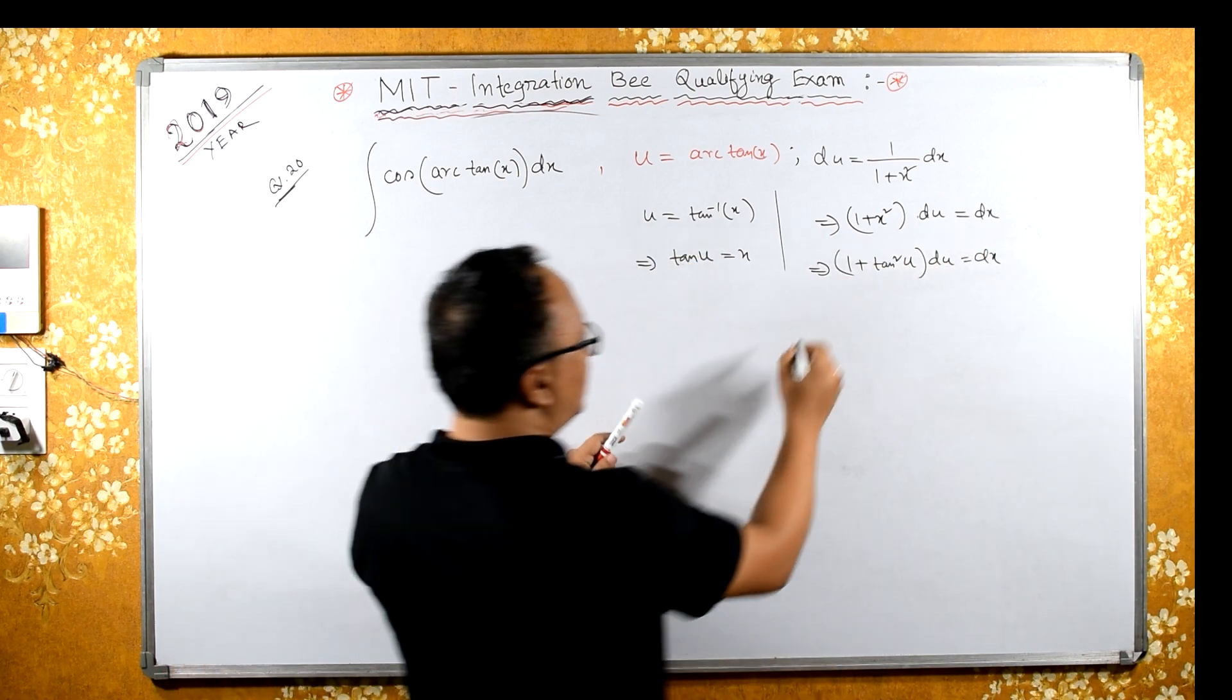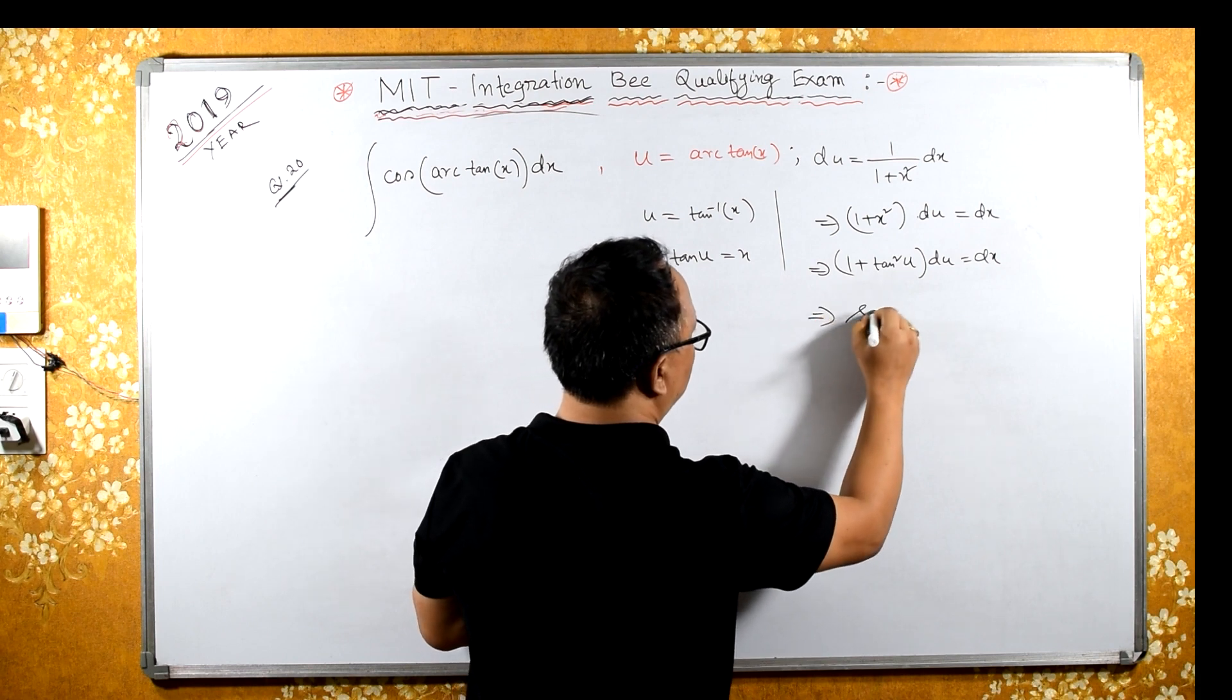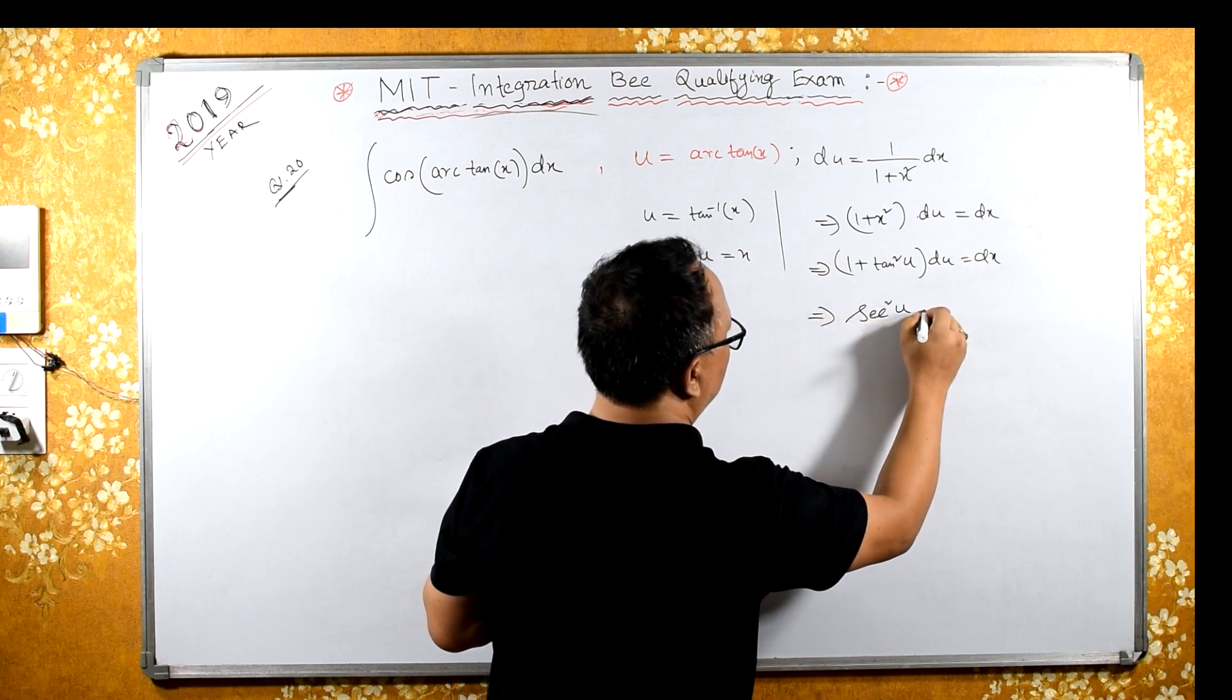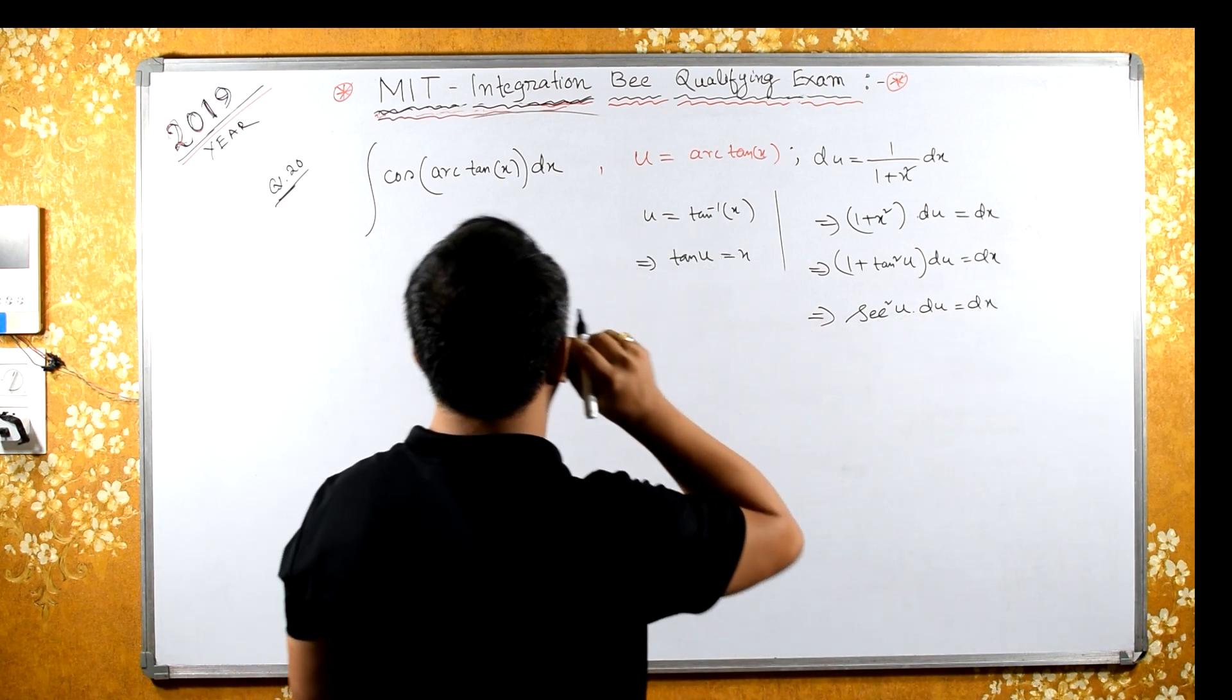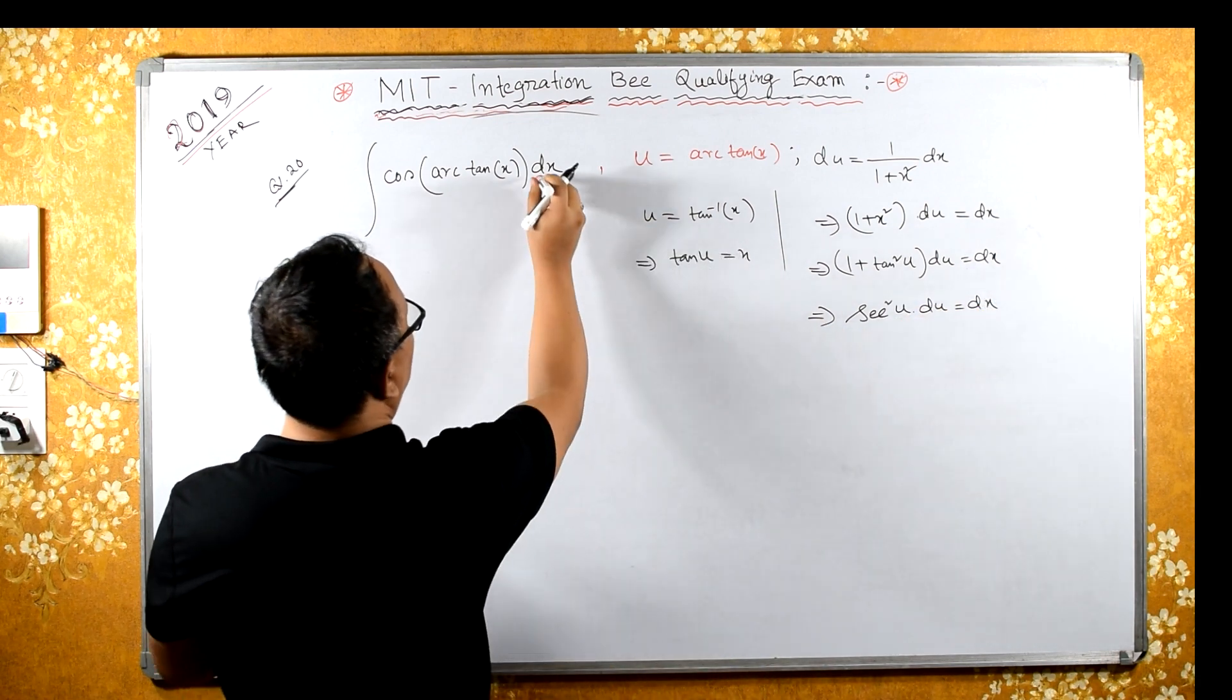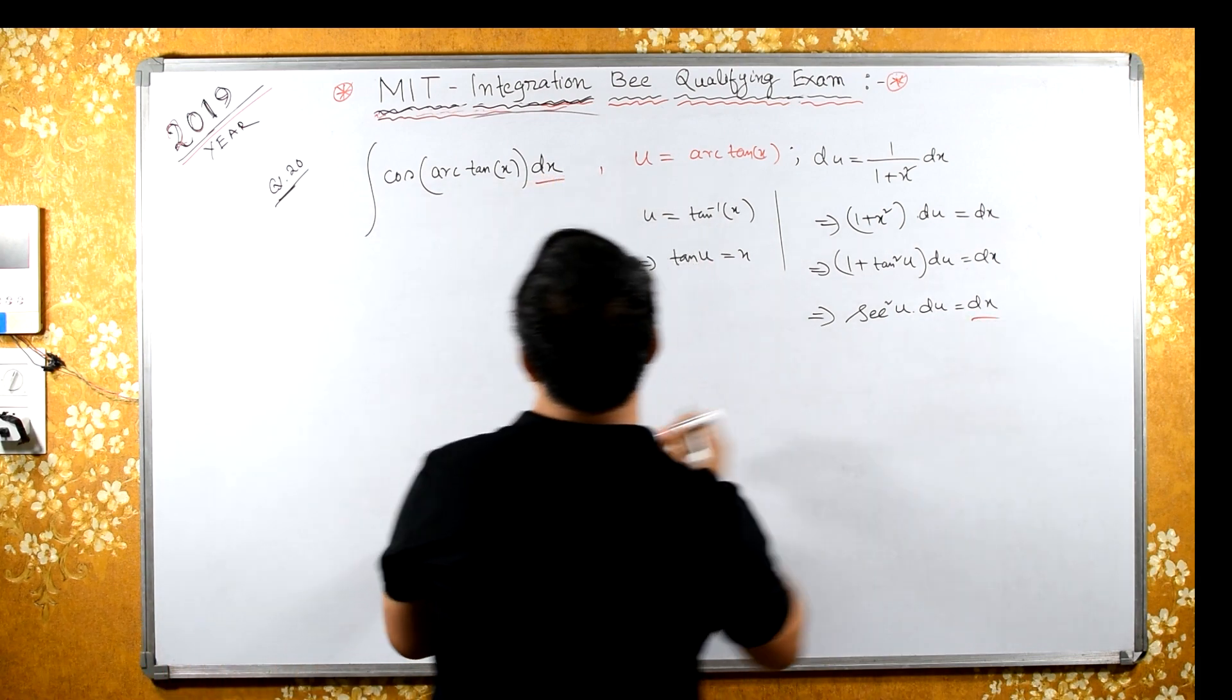1 plus tan squared is sec squared. So sec squared u du equals to dx. Now our dx becomes this.